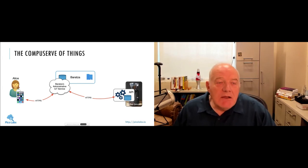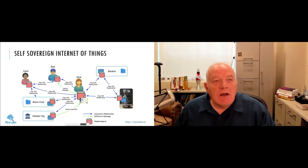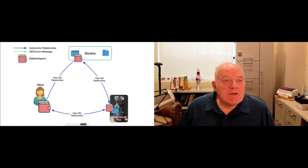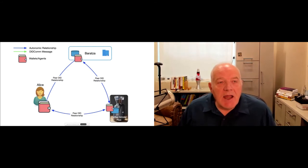This is the diagram I showed you earlier, but now Alice has this coffee grinder out to the right. If we ignore everything else, we just see this. So instead of Baratza intermediating Alice's relationship with her coffee grinder, she instead has a peer DID relationship with her coffee grinder and she has one with Baratza. And interestingly enough, the coffee grinder itself has a peer DID relationship with Baratza.